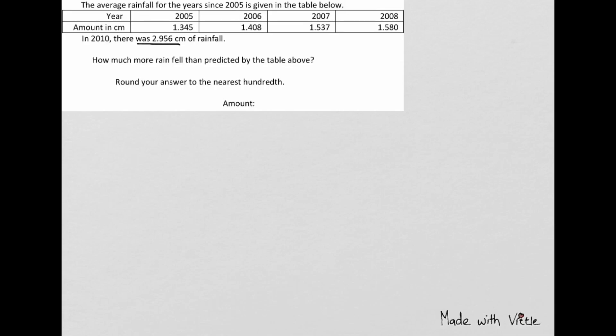To find the average rainfall for the year 2010 predicted by the table above, we're going to use the linear or tangent line approximation. That is because the tangent line is a very good approximation if we are close to this x value, which is 2010.